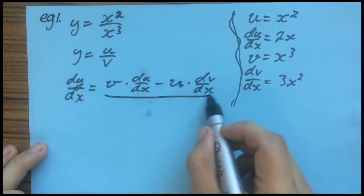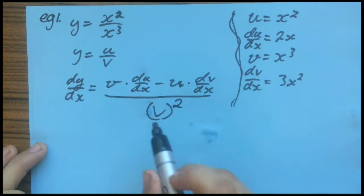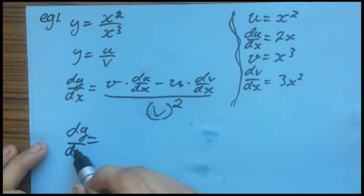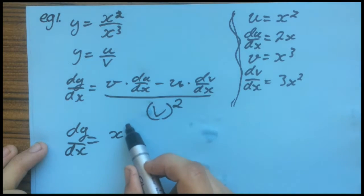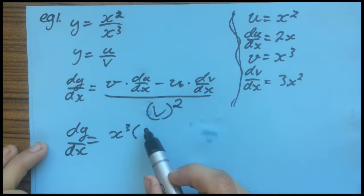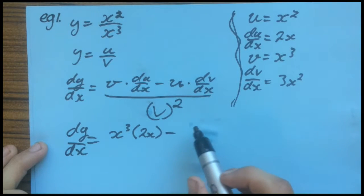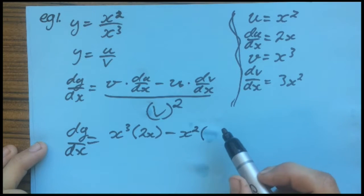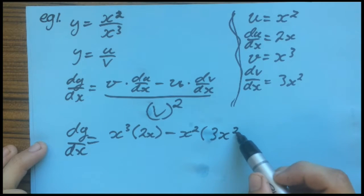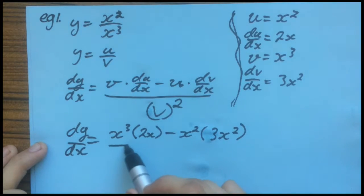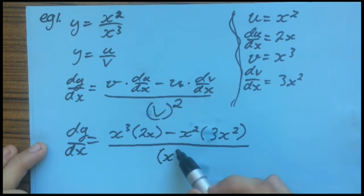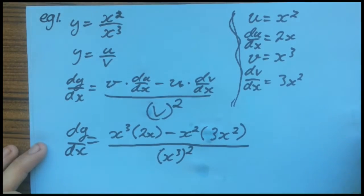And it's all over V squared. So if we substitute this in, what it begins to look like is: V, which is X to the power of 3, multiplied by the derivative of U, which is 2X, minus U, which is X squared, multiplied by the derivative of V, which is 3X squared — all over V, which is X cubed, squared. You can simplify this further and rewrite it however you like, but I'm going to leave it there.